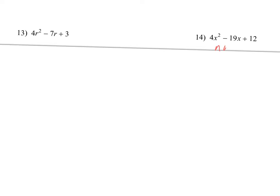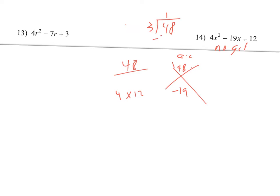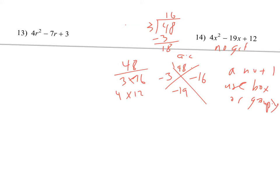Number 14 — no GCF because of that 19. So a times c is 48 (4 times 12), and b is negative 19. I need two numbers that multiply to 48 and add to negative 19. Thinking through factors of 48: 3 times 16 works, and both need to be negative. Since a is not 1, I'll use the box technique on this one.